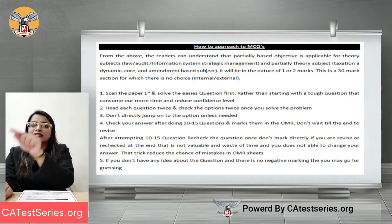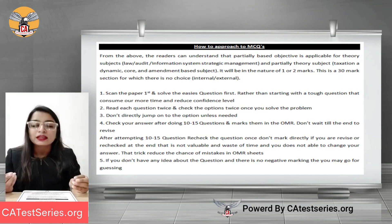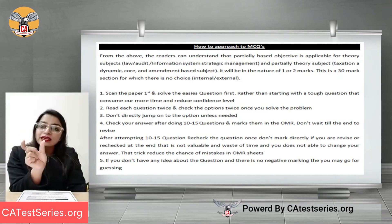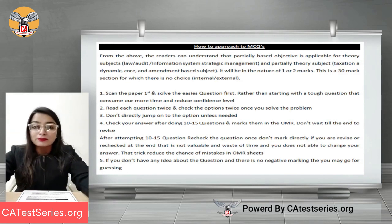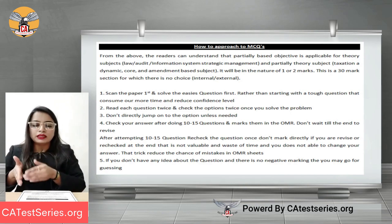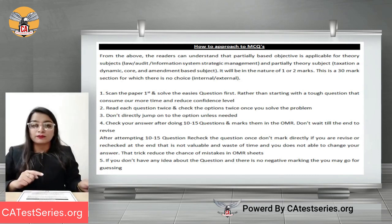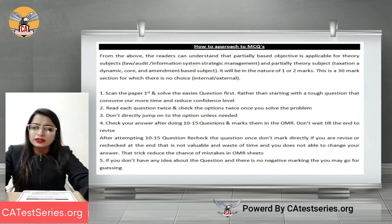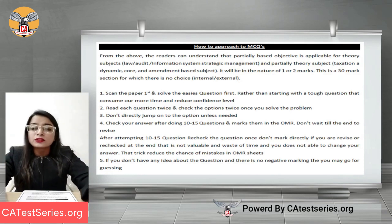A common MCQ mistake is: you mark option B on your MCQ sheet but when transferring to the answer sheet you accidentally write C — because you assume the sequence without checking. You need to be very attentive to confirm it's A, B, C, or D before marking. If you're confused about a question, mark a circle and come back to it later. Don't guess — leave the question and move to the next one.